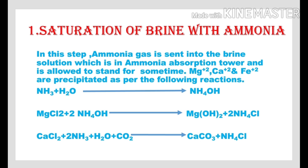The first step in the Solvay process is the saturation of Brine with Ammonia. In this step, Ammonia gas is passed into the Brine Solution which is kept in the Ammonia Absorption Tower and is allowed to stand for some time. In this process, the impurities like Magnesium, Calcium, and Iron ions are removed in the form of their Hydroxides and Carbonates.